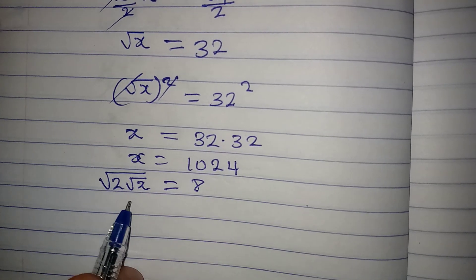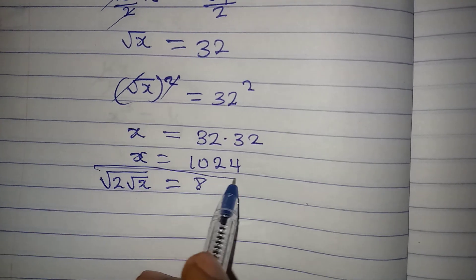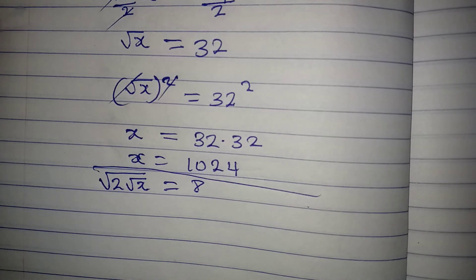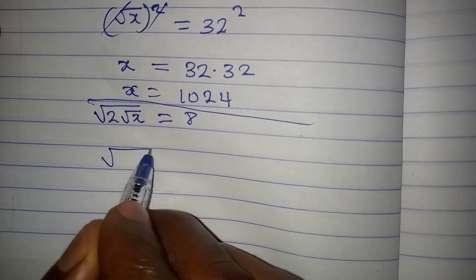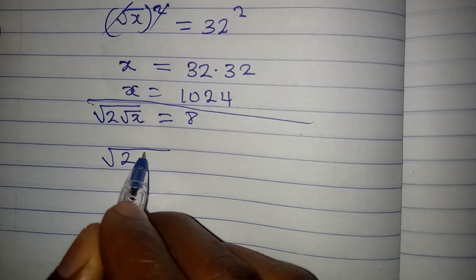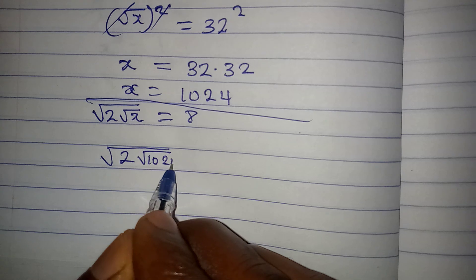If we put this back, do you think we'll have 8 as our answer? Because if we fail to have 8, then we are not correct. Let's put it back. We have square root of 2 square root of x, which is now square root of 1024.